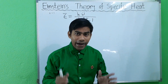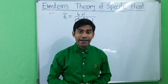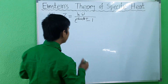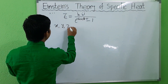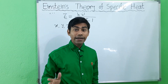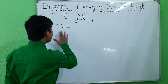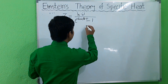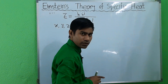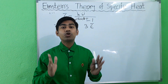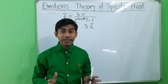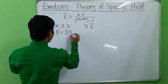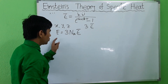This is the mean energy of the oscillator. Now, for an oscillator taking into account three independent directions — x, y, z — the energy per oscillator is 3ε̄. For one mole of solid, the total energy E = 3N_A × ε̄.